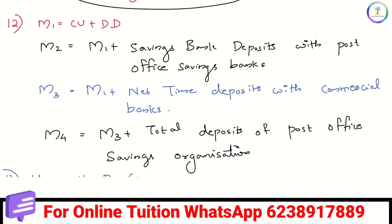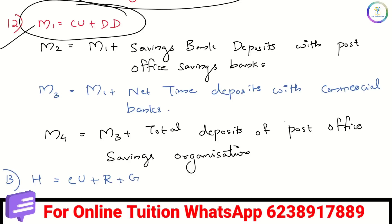In the money and banking chapter, there are four money supply measures. M1 is Cu plus DD — currency and coins plus demand deposits. M2 is M1 plus savings bank deposits with post office savings banks. M3 is M1 plus net time deposits with commercial banks. M4 is M3 plus total deposits of post office savings organizations.